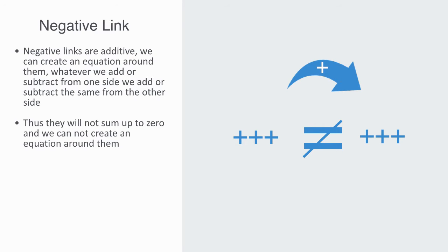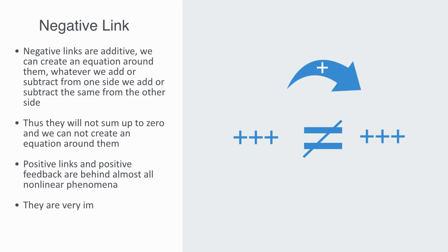Positive links and positive feedback are behind almost all non-linear phenomena. They are very important to understanding the dynamics of non-linear systems. I will now illustrate how this basic formal language can be used to model economic phenomena, such as those in game theory.